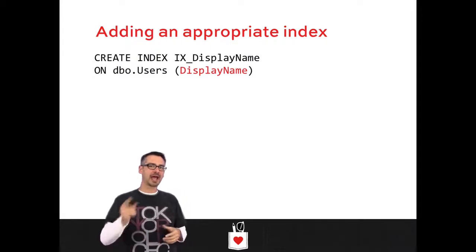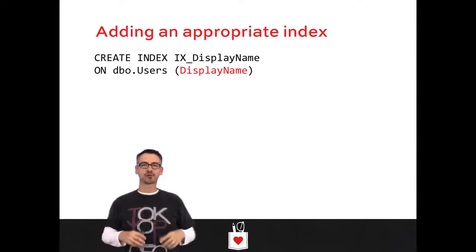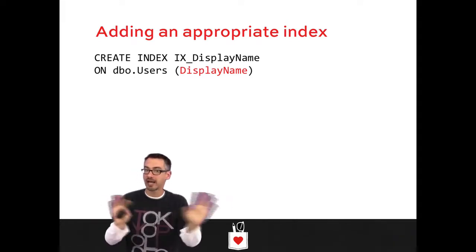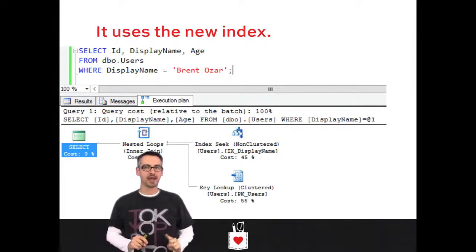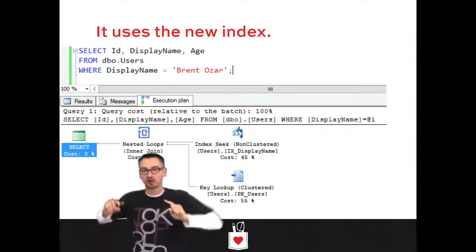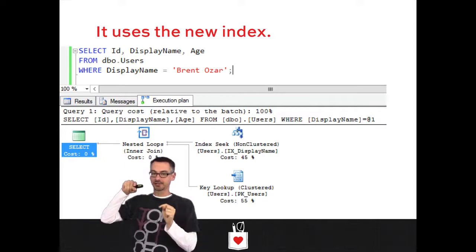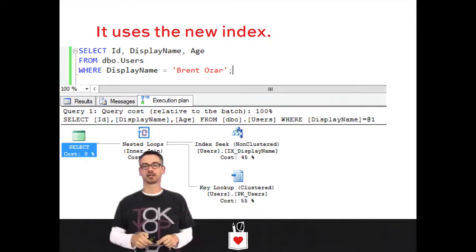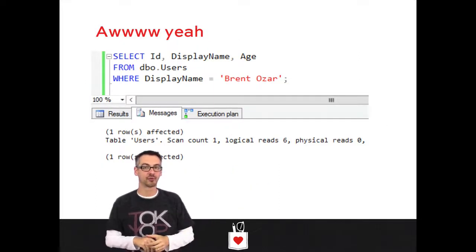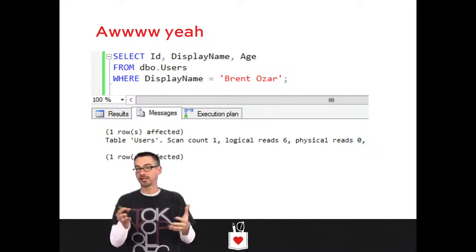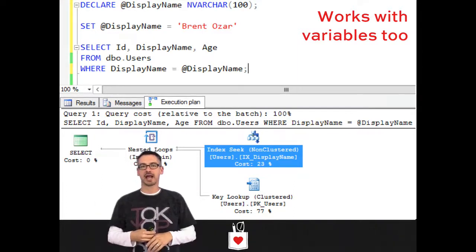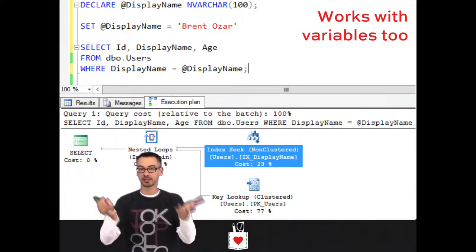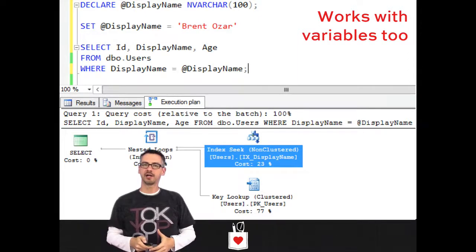What if we added one? Let's create an index on display name — nothing else, not age or last access date, just display name. Now when I run that query, I get a nice index seek followed by a key lookup, because SQL Server goes directly on the display name index to 'Brentozar,' gets the ID, then goes back to the clustered index. The logical reads drop to just six. It even works with variables — set display name as a variable, pass in 'Brentozar,' and SQL Server figures it out with statistics.